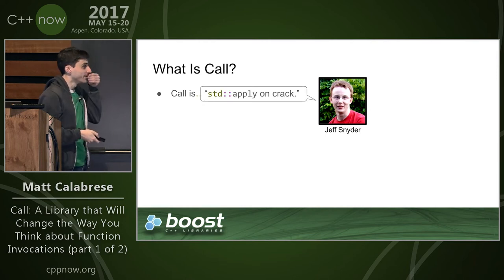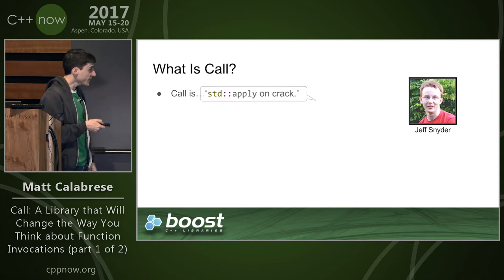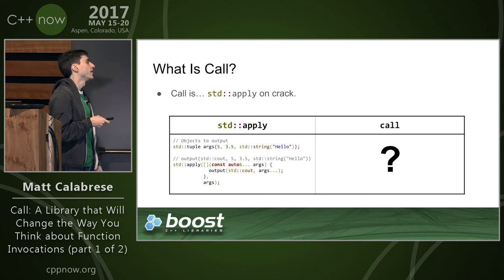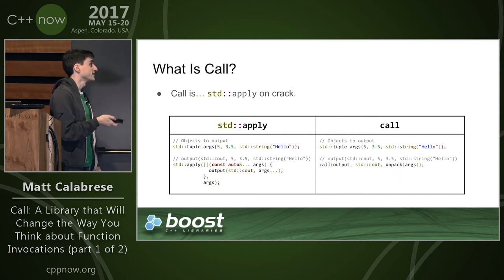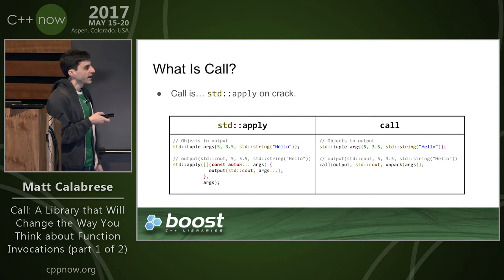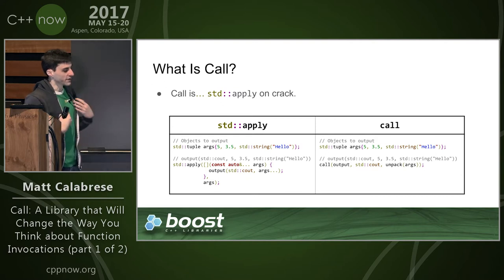My favorite description is by Jeff Snyder, who is at this conference: he likes to describe it as 'std::apply on crack.' Here's one of our earlier examples — the output example that was very complicated with std::apply, requiring a lambda. What the call library allows you to do is simply: create your tuple, invoke this higher-order function called 'call,' pass it the function object 'output,' pass 'std::cout' which goes along as normal, then use the notation 'unpack(args)' — a placeholder that captures args by reference and tells the call algorithm to expand the tuple.